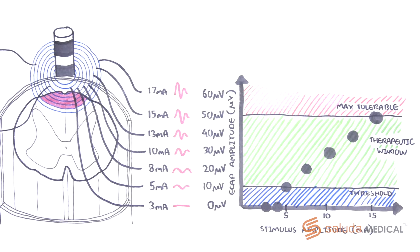In this video we will explain how ECAP controlled closed loop spinal cord stimulation system works to maintain therapy within this therapeutic window and how this differs from other spinal cord stimulation systems.